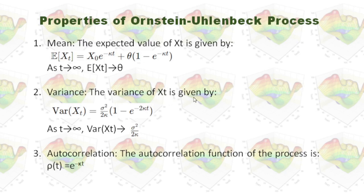The variance of x(t) is given by this formula. When t approaches infinity, the time-dependent term goes to zero, so the variance of x(t) becomes sigma squared divided by 2 kappa. The autocorrelation function of the process follows this formula.